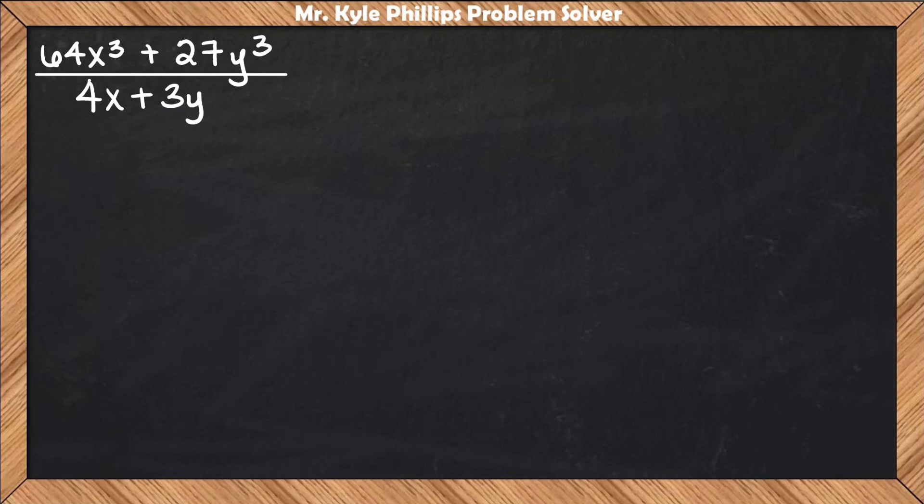Looking at my numerator, I have what appears to be a sum of cubes. The sum of cubes rule is (a + b)(a² - ab + b²). So I'll need to find the value of my a and b.